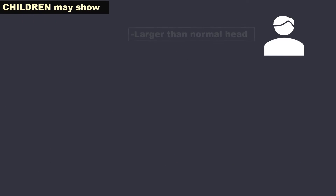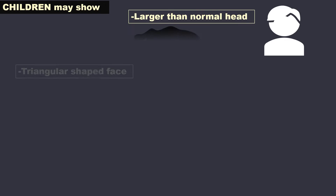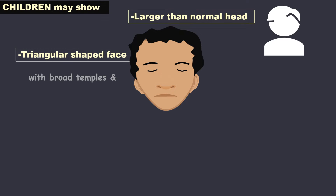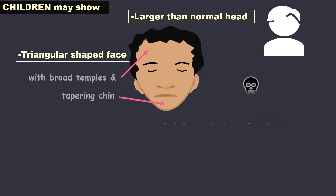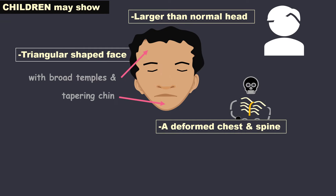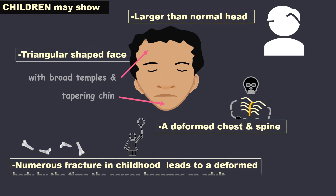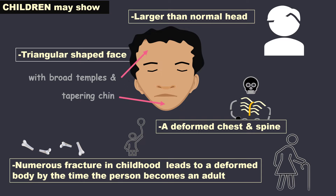Children may show a larger than normal head and a triangular-shaped face, like an inverted triangle with broad temples and a tapering chin. A deformed chest and spine are also often seen. Numerous fractures can occur in childhood and heal, but this leads to a deformed body by the time the person becomes an adult.